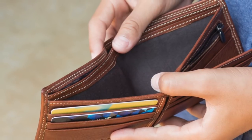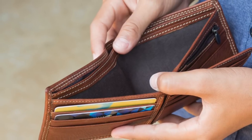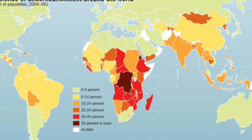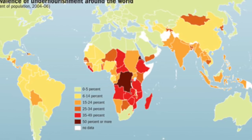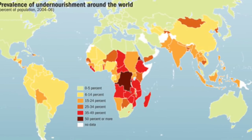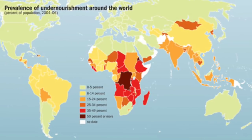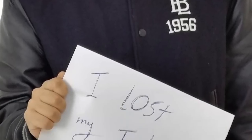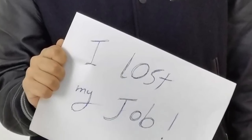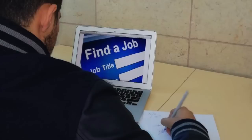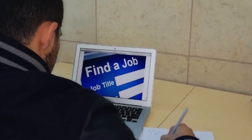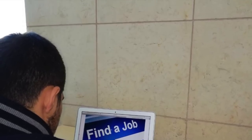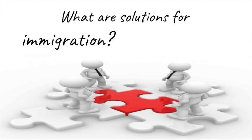Another cause of immigration is economic crisis. In poor countries the percentage of poverty is very high and many people cannot get a job. Therefore, they are moving to developed countries to find work and have a better life.